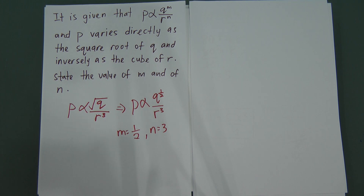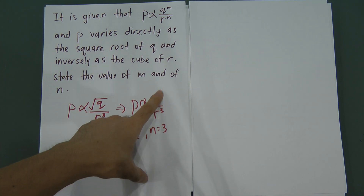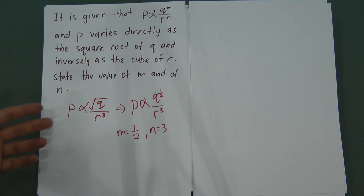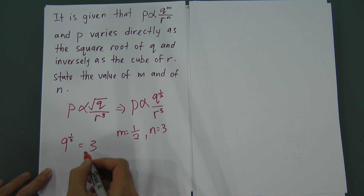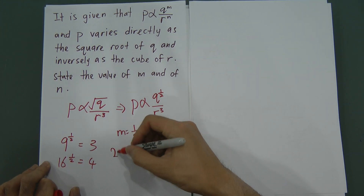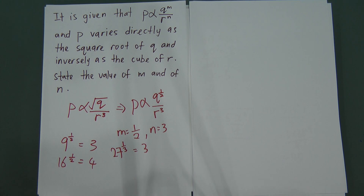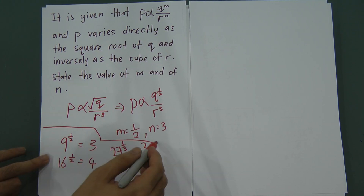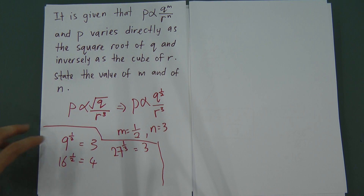Remember the key point: square root equals power of 1/2, and cube root equals power of 1/3. You can verify on a calculator — press 9^(1/2) and get 3, or 16^(1/2) and get 4, or 27^(1/3) and get 3. Hopefully these three past year examples help you better understand the chapter on variation. Thanks for watching.